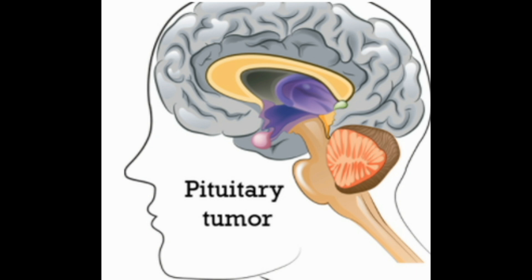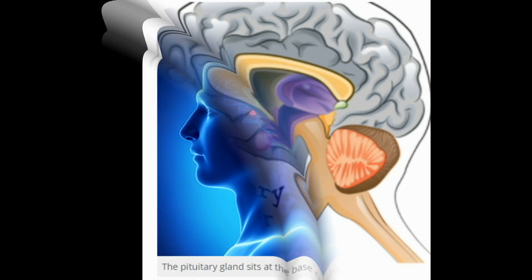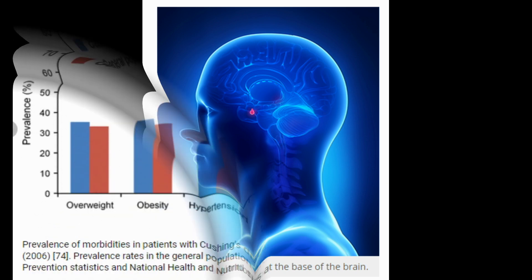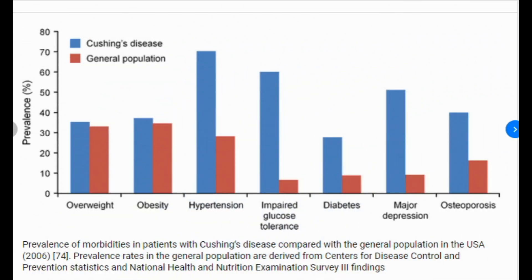Cortisol is a normal hormone produced in the outer portion of the adrenal glands. When functioning correctly, cortisol helps the body respond to stress and change. It mobilizes nutrients, modifies the body's response to inflammation, stimulates the liver to raise blood sugar, and helps control the amount of water in the body. Cortisol production is regulated by ACTH produced in the pituitary gland.